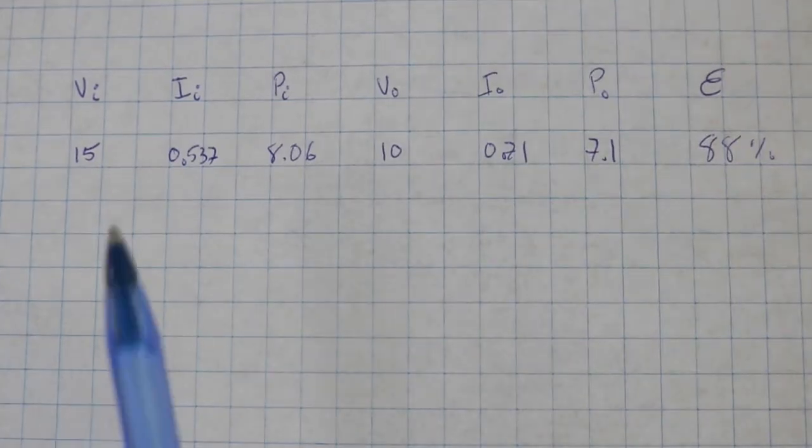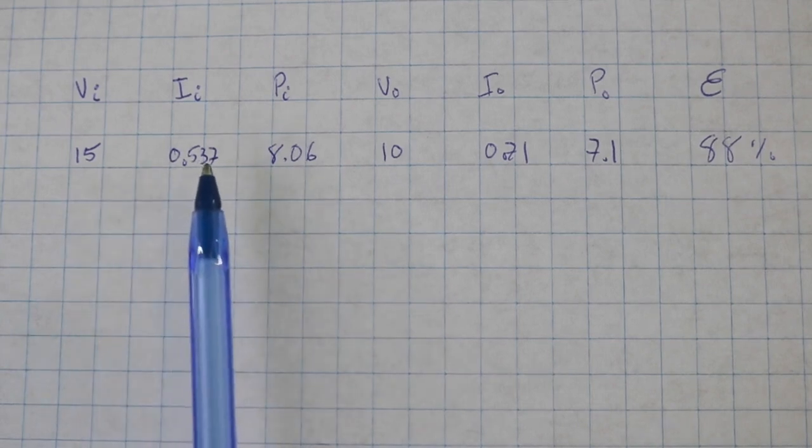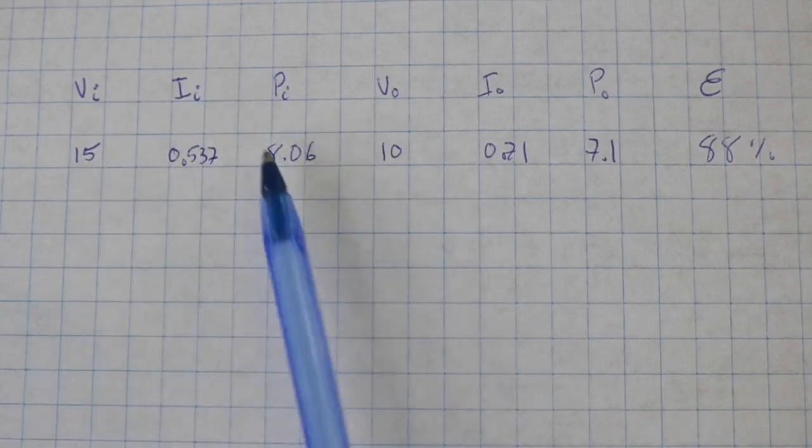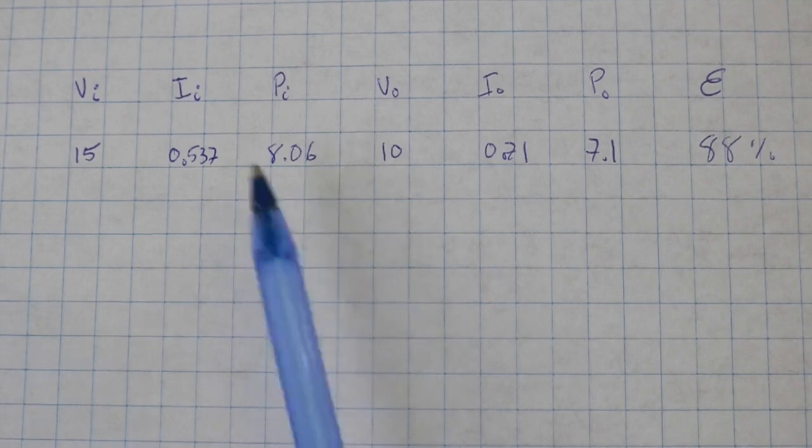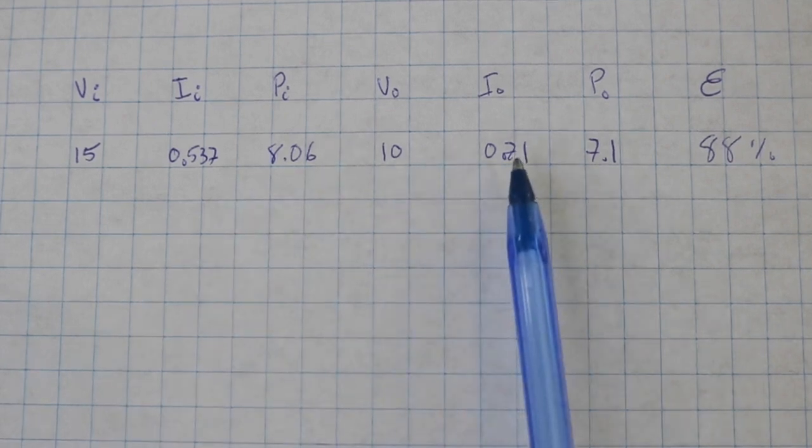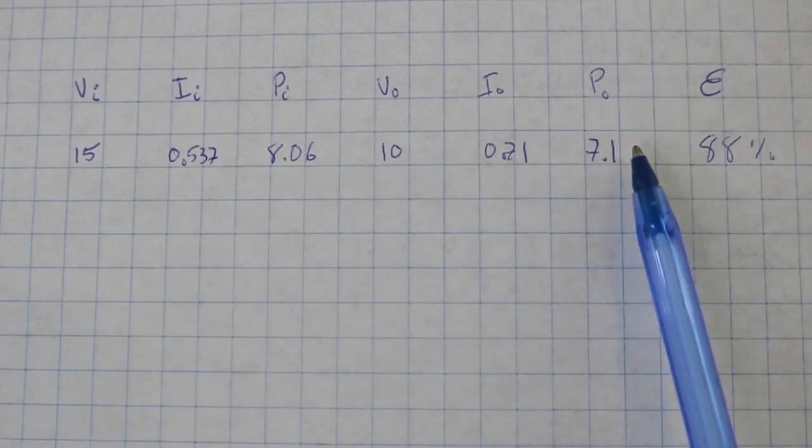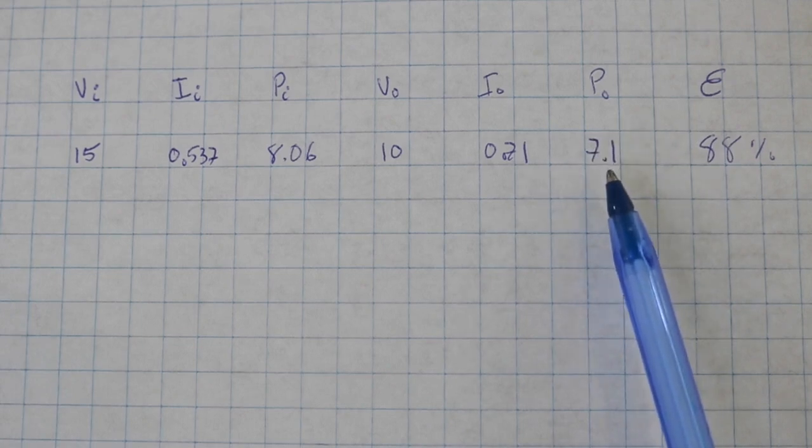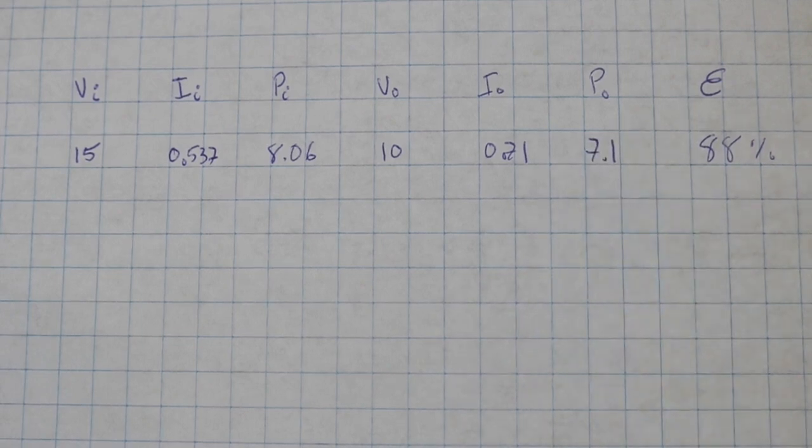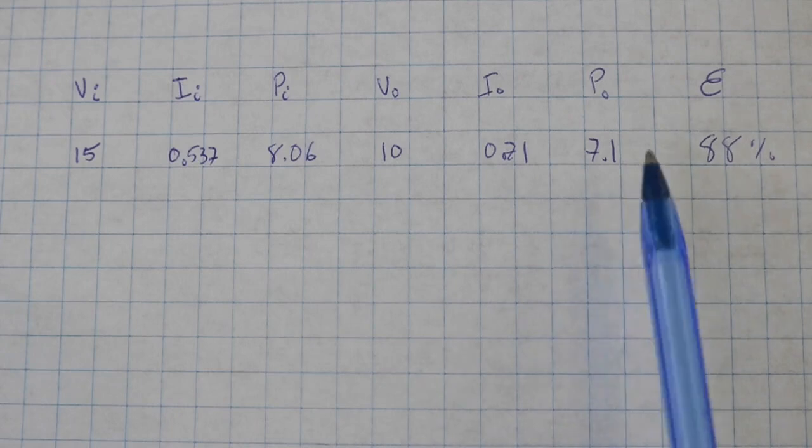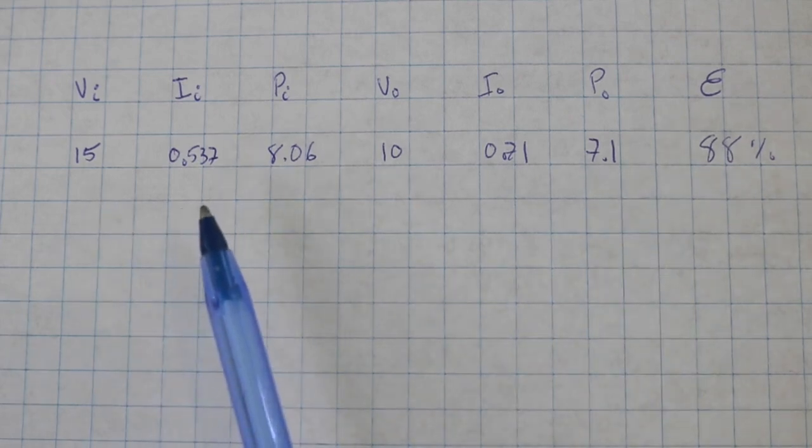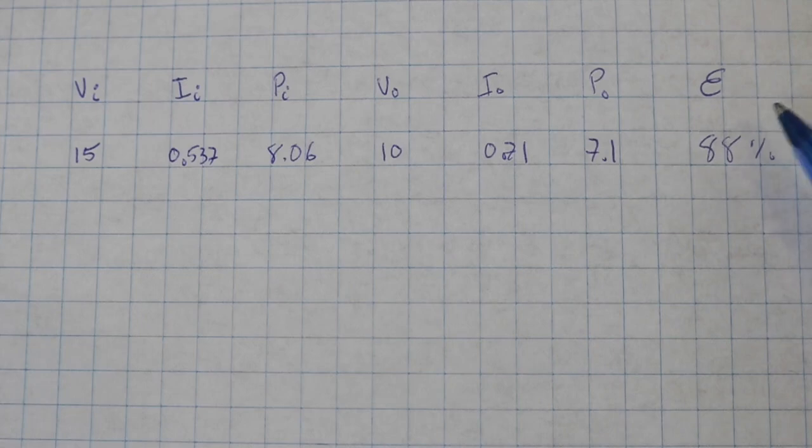Here are the results: voltage and current at the input, the product gives a little bit above 8 watts, and voltage and current at the output, so the output power is 7.1 watts. The division of 7.1 divided by 8.06 gives an efficiency of 88 percent.